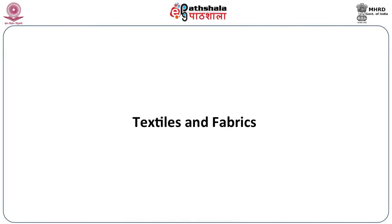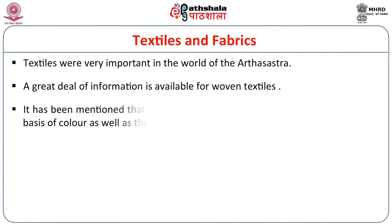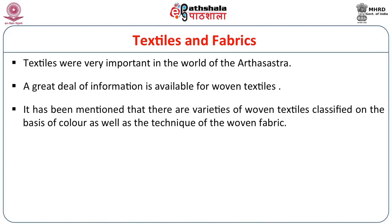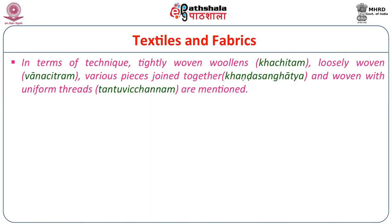When we are talking of dresses, we have to understand what material the dresses were made from — and herein comes the topic of textiles and fabrics. Textiles were very important in the world of the Arthashastra. A great deal of information is available for woven textiles, classified on the basis of colour as well as technique. For instance, white (shuddha), all red (shuddha-rakta) and partly red (paksha-rakta) are the kinds of woven fabrics by colour. In terms of technique, tightly woven woolens (khachitam), loosely woven (vanachitram), various pieces joined together (khanda-sangathya) and woven with uniform threads (tantu vichhanam) are mentioned. This kind of terminology shows us how important was textile or weaving in that period.